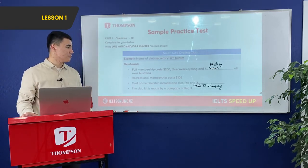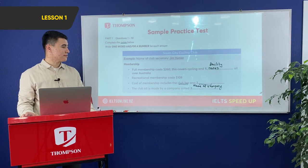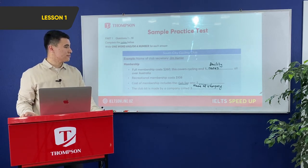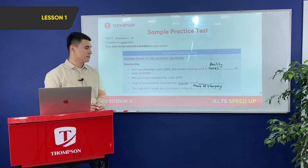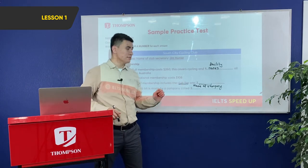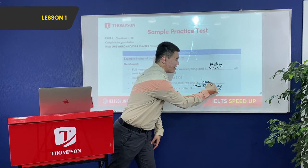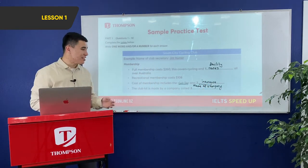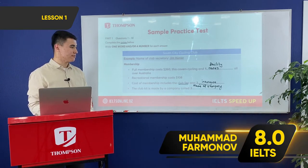The caller is more interested in recreational membership. Jim explains it's $108 if you're over 19 and $95 if under. It's paid quarterly and can be upgraded to full membership later. Both types of membership include the club fee of $20 and also provide insurance in case of an accident. So the answer for question two is 'insurance.'